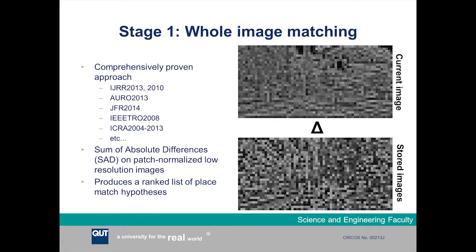The first stage of the process is whole image matching, where images of the place we're trying to match are compared using low-resolution, contrast-normalised images and a comparison method such as sum of absolute differences. This has been a comprehensively proven method shown in many papers in the past. It's very simple, and what it does is give you a ranked list of place match hypotheses from the best to the worst match hypothesis out of your entire database of images.